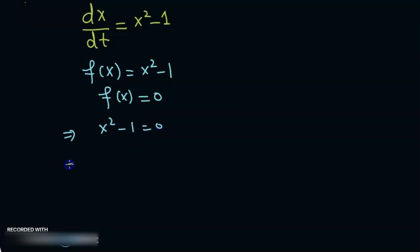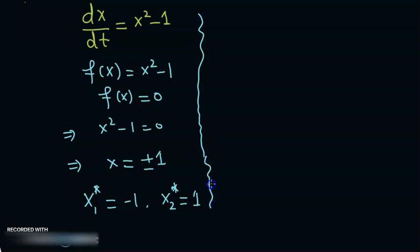This gives me x to be plus minus one as its equilibrium solutions. So x star one is minus one and x star two is one. First we want to analyze these two equilibrium solutions.